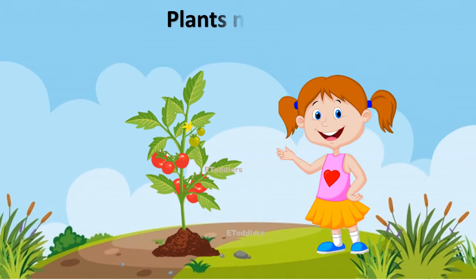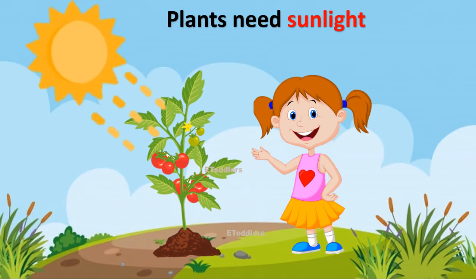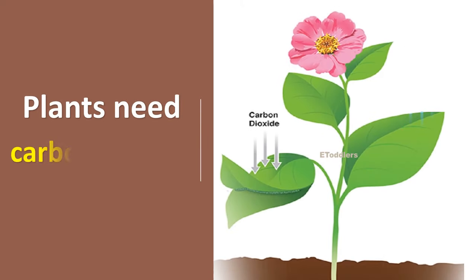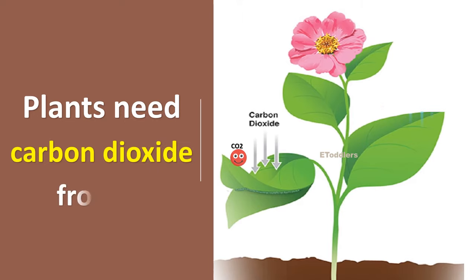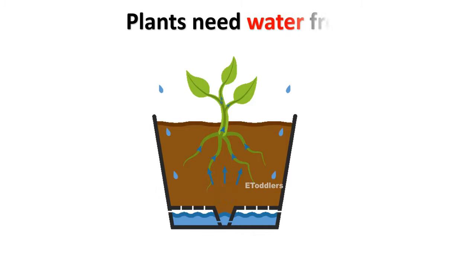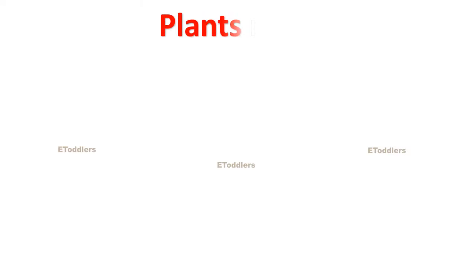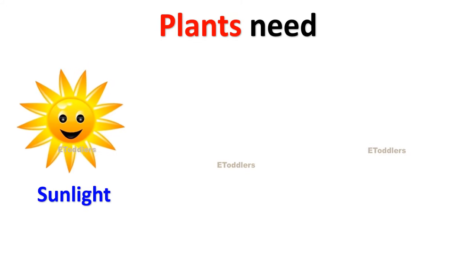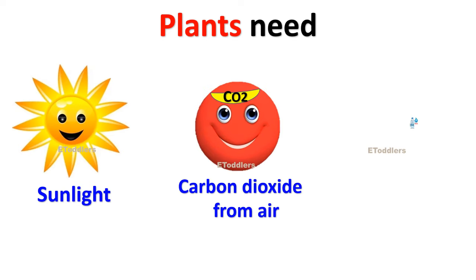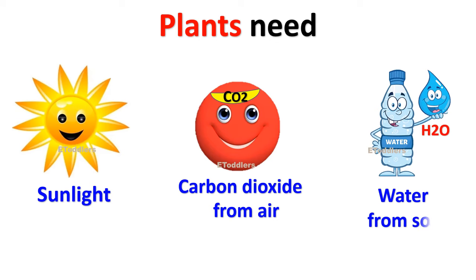Plants need sunlight. Plants need carbon dioxide from air. Plants need water from soil. So, plants need sunlight, carbon dioxide from air, and water from soil to prepare their own food.